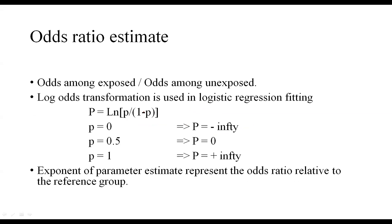How can we estimate the odds ratio using logistic regression? We use certain types of transformations to fit the logistic regression model. The transformation commonly used is called the log-odds transformation. If p is the probability of seeing the event, we transform p into its natural logarithm: ln(p / (1 - p)).